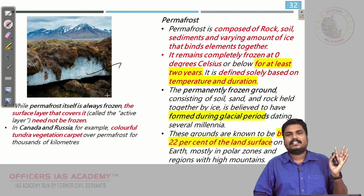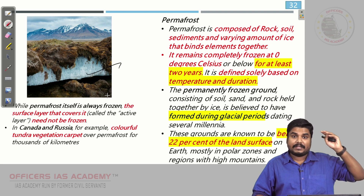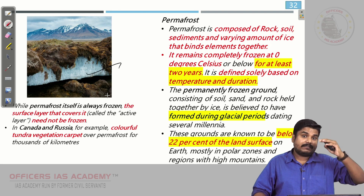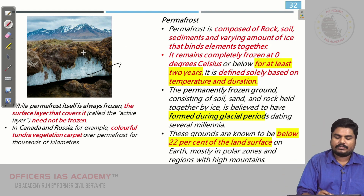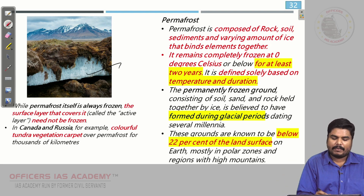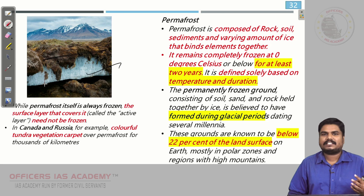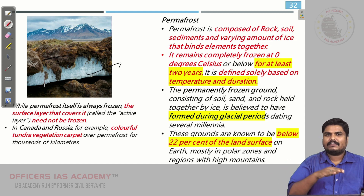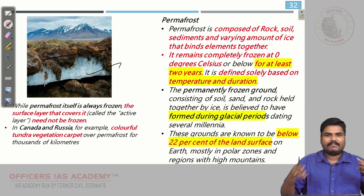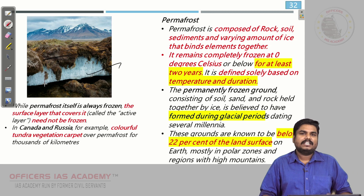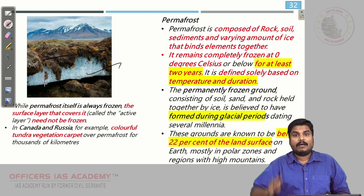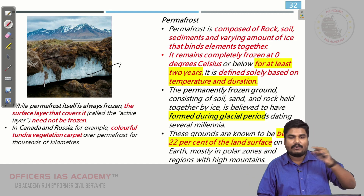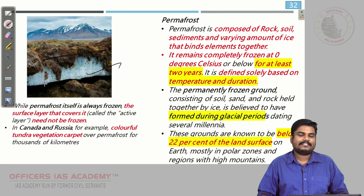Most permafrost regions were formed during the glacial period, the ice age itself. Do not think that the entire ground should be in the form of ice — the top layer can have some kind of vegetation. For example, if you go to Russia or Canada, you will find tundra vegetation over and above permafrost regions. You will find permafrost in the arctic regions as well as on mountain tops.